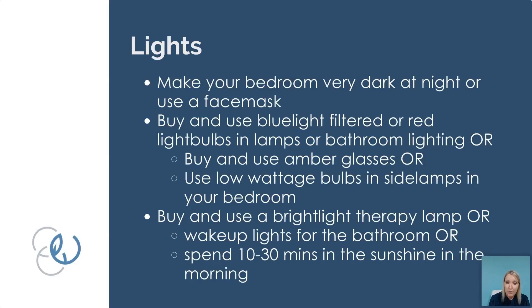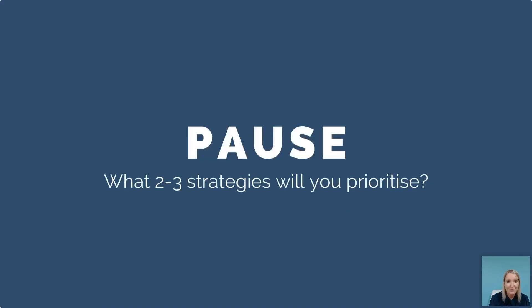If you can't buy a bright light therapy lamp, you could buy wake-up lights for the bathroom — use them when having your morning shower to signal to your body that it's morning. And spend some time in the sunshine first thing in the morning to tell your body it's daytime, stop making melatonin, and start making cortisol for energy. That'll help your body know it's morning so it recognizes nighttime later. What two strategies will you prioritize in the area of light exposure?